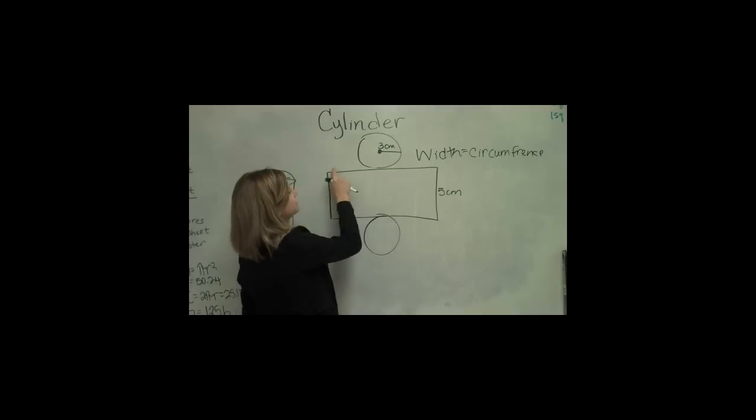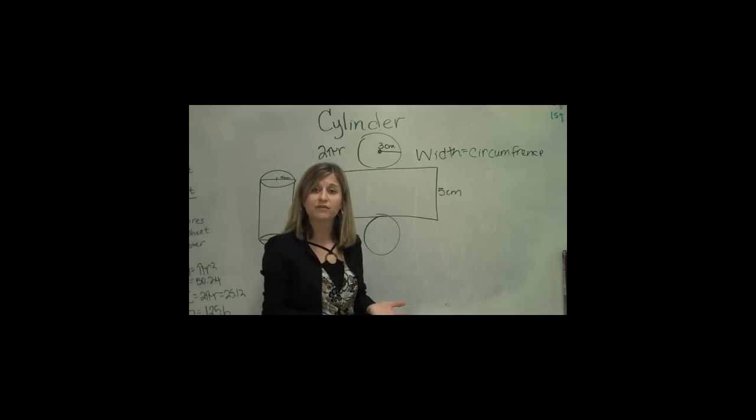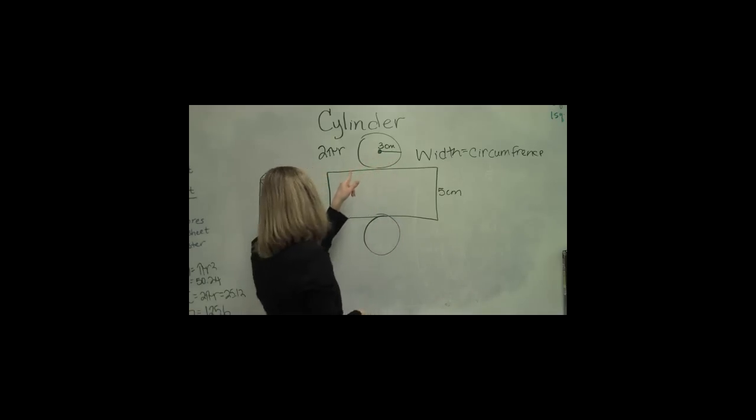So the circumference of a circle, the formula is 2 times pi times the radius. So if I take 2 times 3.14 times the radius of 3, I am going to get 25.12.